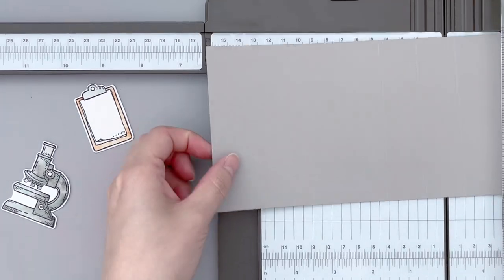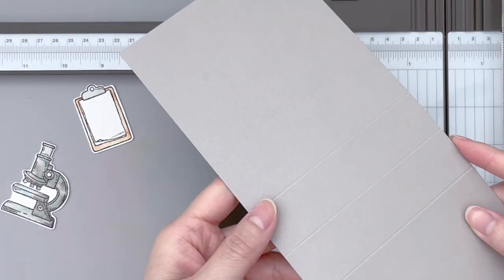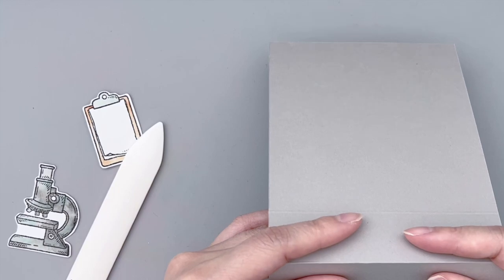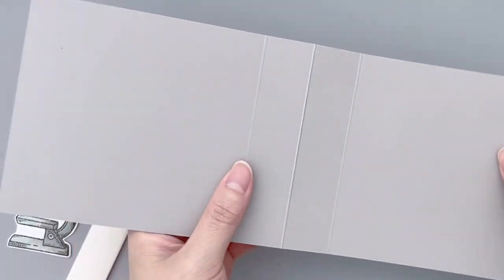One will be at 4.5 and the other at 6.5. Here we can see that we now have three score lines for this A2 card base.